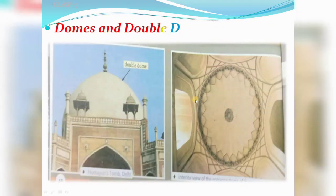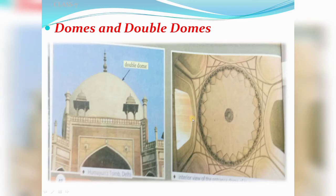Let's discuss about domes and double domes. Domes and double domes are another distinct feature of Indo-Islamic architecture. The double dome comprises an inner and outer layer of the ceiling, placed in such a way that the proportion of the exterior is not disturbed.